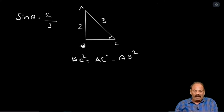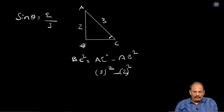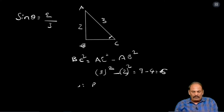AC square value is 3 square minus 2 square. 3 square value equal to 9, minus 2 square value equal to 4. Therefore that equals 5. Therefore BC equal to root 5. We calculated this value.